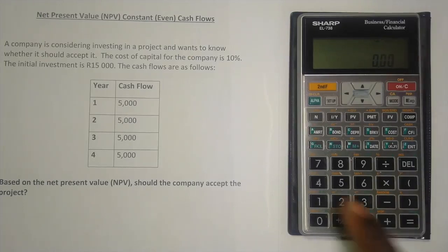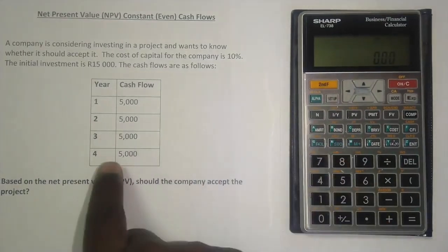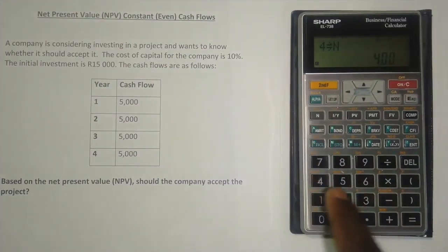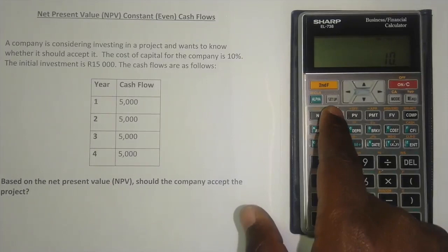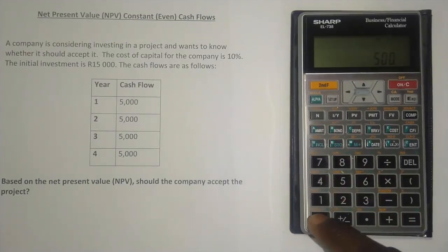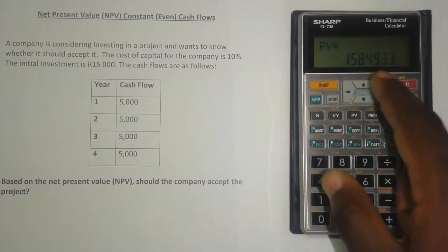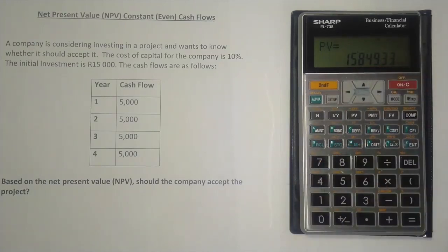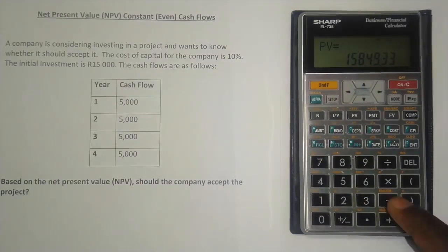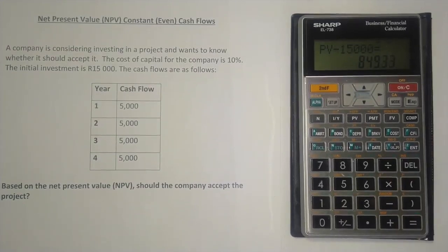For the second method, clear the memory again: second function, alpha, zero, zero. Enter the number of years — four — and press N. Enter the interest rate of 10 and press I/Y. Enter the payment of 5,000 rand, press plus/minus to make it negative (so the present value appears as positive), then press PMT. Press comp and then PV — the calculator gives 15,849.33 rand. Deduct the initial investment of 15,000 rand.